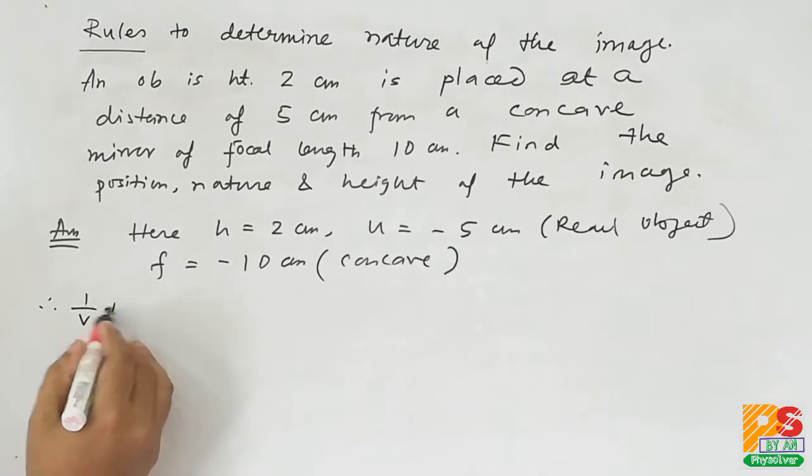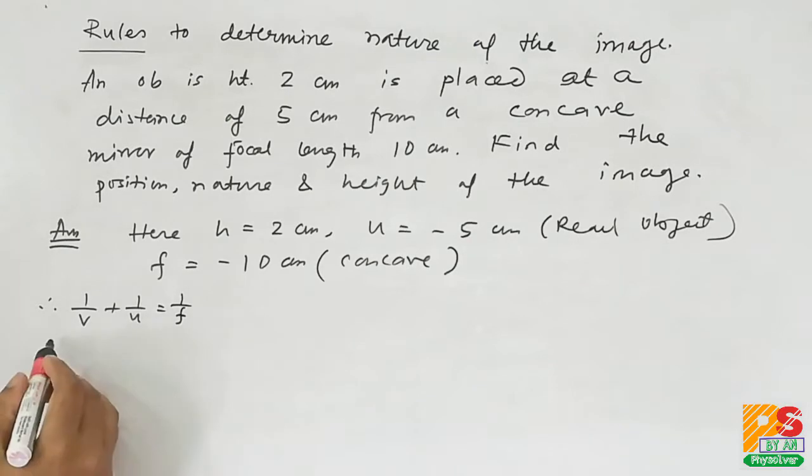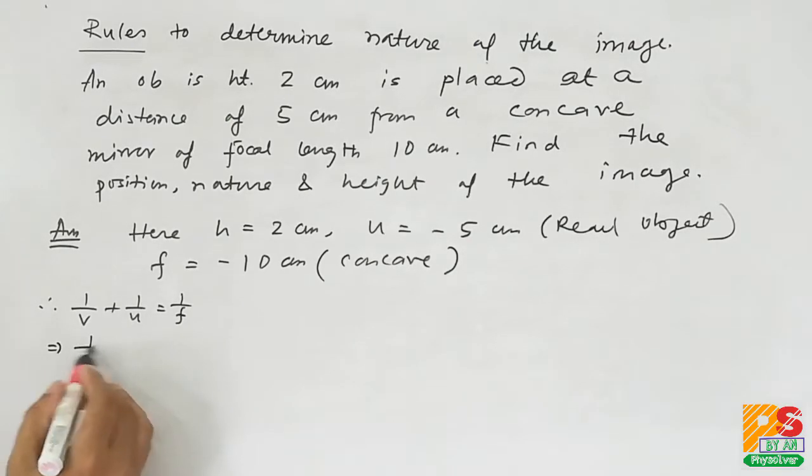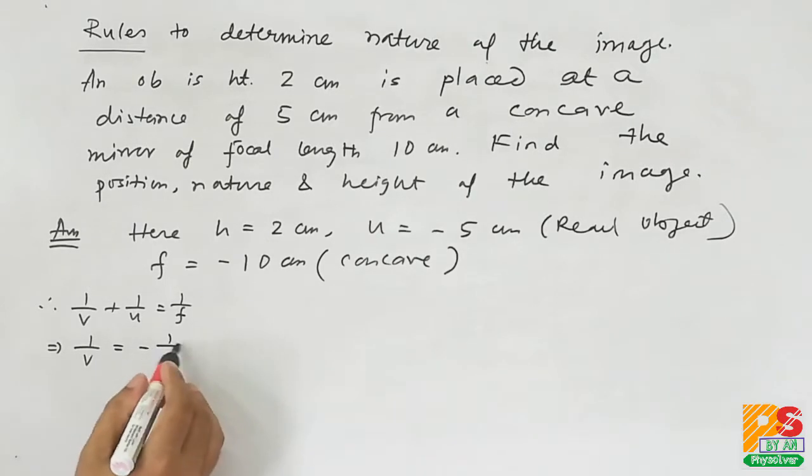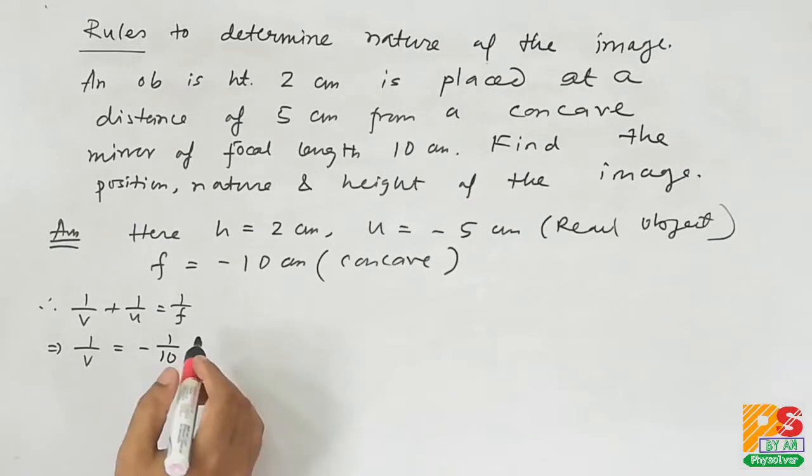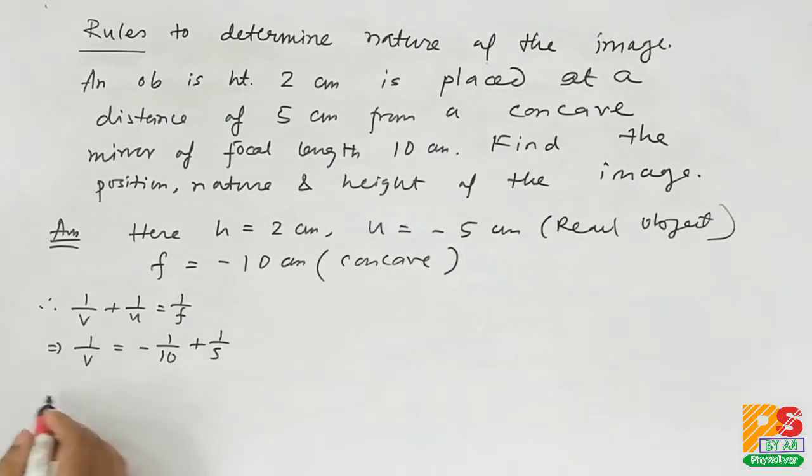Now for mirror we know 1 by V plus 1 by U equals to 1 by F. Putting the values with proper sign, V is minus 10 cm.